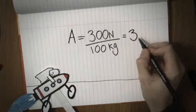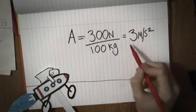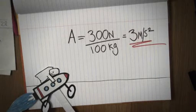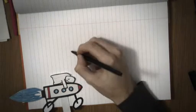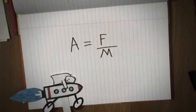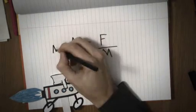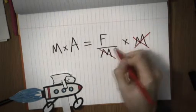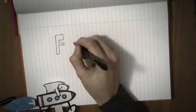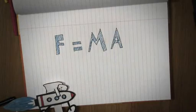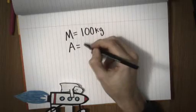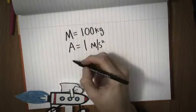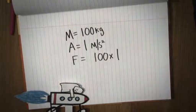So after one second, you'd be moving at 3 metres per second. After two seconds, it would be 6 metres per second, and so on. Now that sounds a bit scary. What if I only wanted to accelerate at 1 metre per second squared? How big a force would I then need? Well, all you need to do is rearrange the formula. If acceleration equals force over mass, then we multiply both sides by mass and get mass times acceleration equals force. We often shorten this to F equals ma. So if the mass is 100 kilograms and the acceleration we want is 1 metre per second squared, the force I would need would be 100 times 1, so that's 100 newtons.